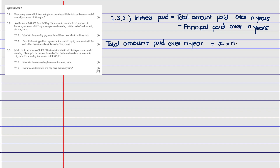Total amount paid over n years = monthly installment × number of years × m. So: 4396.83 × 9 × 12. Pass that into the calculator and you get R474,857.67.